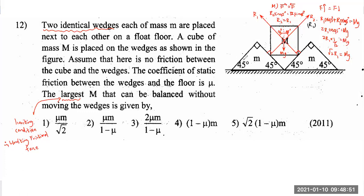Moving on to the wedge of mass m. By Newton's third law, since the wedge exerts R2 on the cube, the cube exerts R2 in the opposite direction on the wedge. Additionally, the weight mg acts vertically downwards on the wedge, and there is a perpendicular reaction R3 between the floor and the wedge.